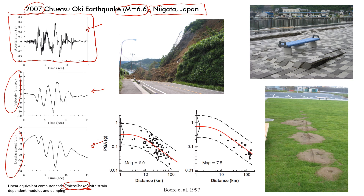You can look at the maximum displacement — it's going to be here — and this is what we call peak ground displacement. In this case it was about 40 centimeters. If you think about it, that's actually a pretty large displacement that can lead to problems on natural slopes like the one you see here.